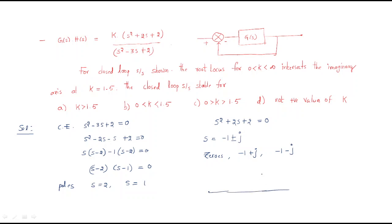Now we draw the s-plane. We have s = 1 and s = 2 as two poles on the right-hand side. The zero at -1 + j is plotted in the left-hand side, and the other zero at -1 - j is also on the left-hand side. With both poles in the right-hand side and two zeros on the left, the root locus path goes from the poles toward the zeros.